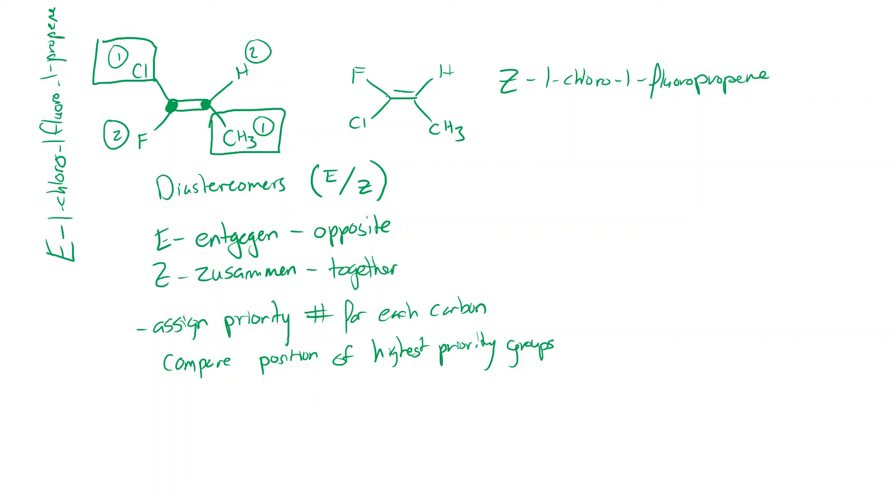And in fact, that is true. If we assign priority numbers this side, chlorine is higher than fluorine. On this side, the methyl group is higher than the hydrogen. And notice that our two highest priority groups are on the same side of the double bond. So they are together, which is, as we say in German, is Zusammen. And that makes this one the Z double bond.